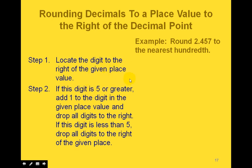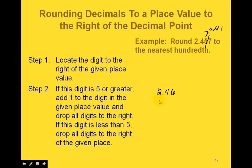Here are the steps for rounding decimals to a specific place value. First, locate the digit to the right of the given place value. For example, rounding 2.457 to the nearest hundredth: draw a line between the hundredths place and the next place to the right. We look at the 7 — if this digit is 5 or greater, we add 1 to the digit to the left and drop everything to the right. Adding 1 to 5 makes it 6, and dropping the rest gives us 2.46.